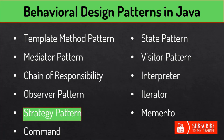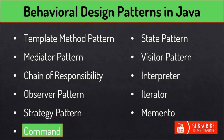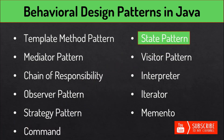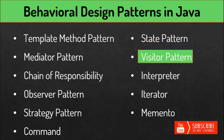The Command pattern is useful when we need to implement loose coupling in a request-response model. The State design pattern is useful when an object changes its behavior based on its internal state. The Visitor pattern is helpful when we have to perform an operation on a group of similar kinds of objects — with the help of visitor pattern we can move the operational logic from the objects to another class.